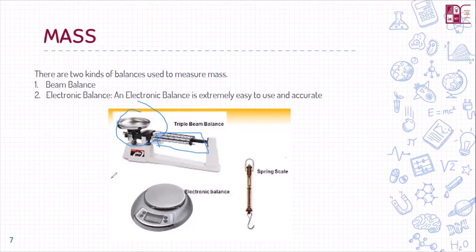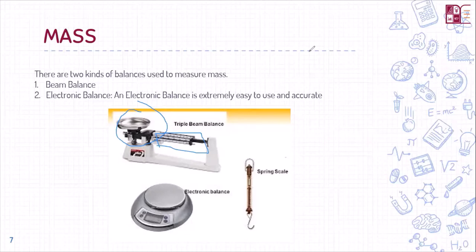The electronic balance is much easier to use and much more accurate — you simply place your sample on it and the reading is digitally calculated and displayed. It can even read to the nearest 0.01 grams. It is extremely easy and quick to use.